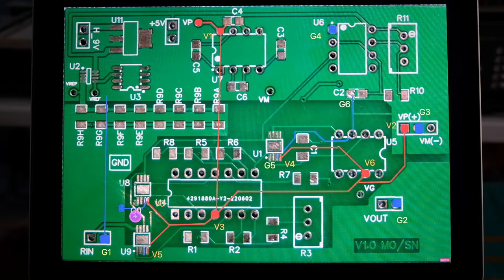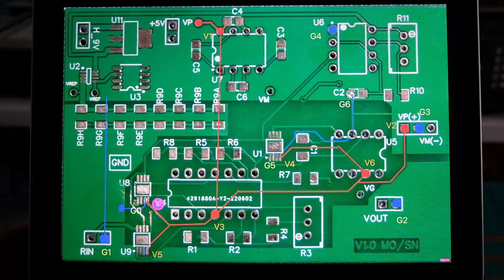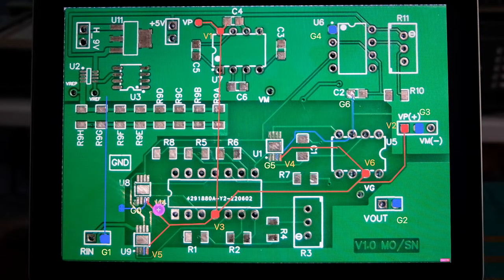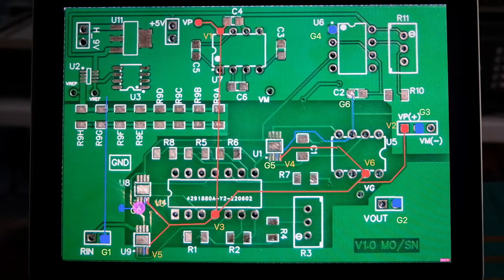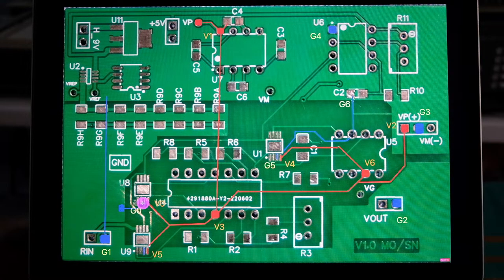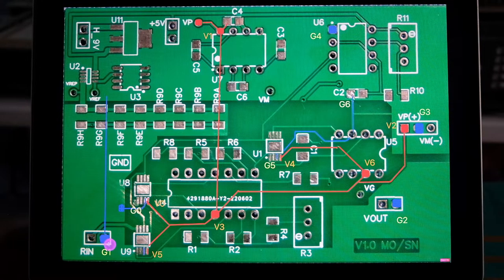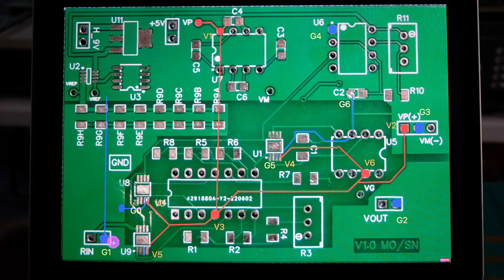So G0 is ground connection and V0 is the voltage connection of that particular power supply. So we'll look at different impedances or resistances between different points on this in the next few slides.